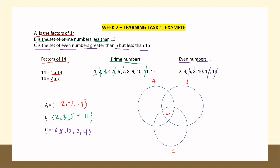The middle part represents the common elements found in Set A, Set B, and Set C — elements that appear in all three sets. There are none, so we leave it blank. Next, for A and B — is there any common element found in Set A and Set B? Yes, we have 2 and 7.